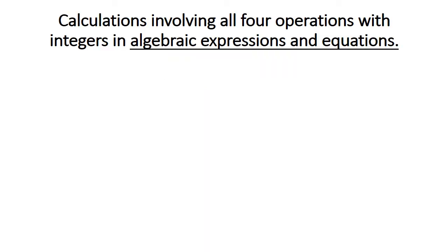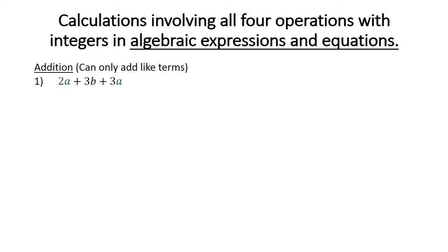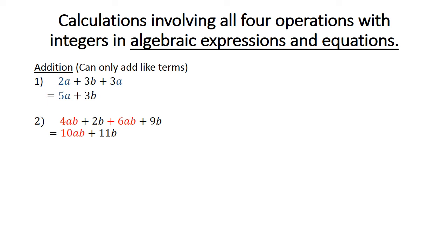We are going to use all 4 operations with integers in algebraic expressions and equations. Addition — remember, you can only add like terms. 2a plus 3b plus 3a: you can only add 2a plus 3a, which equals 5a plus 3b. 4ab plus 6ab plus 9b: 4ab and 6ab are like terms, so we can add them to get 10ab plus 9b.